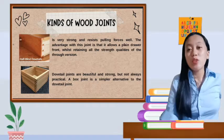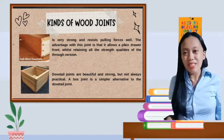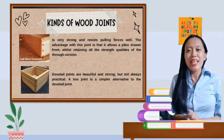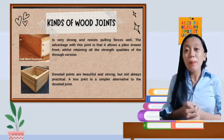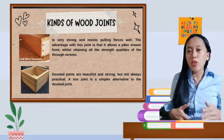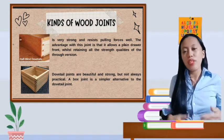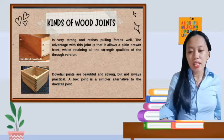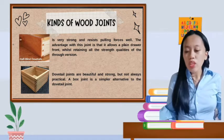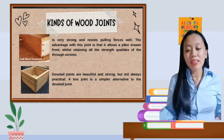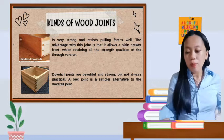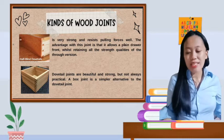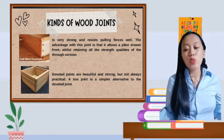Do you understand? Let's proceed to the half-blind dovetail joints. It is very strong and resists pulling forces as well. The advantage with this joint is that it allows a plain drawer in front whilst retaining all the strength qualities of the true version. If you notice in the half-blind dovetail, there are fewer tails and pins. But the advantage here is you can push it and it's easier to use compared to the true dovetail joints.